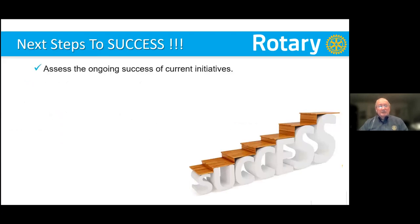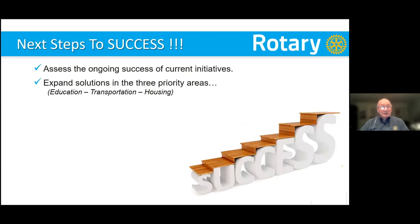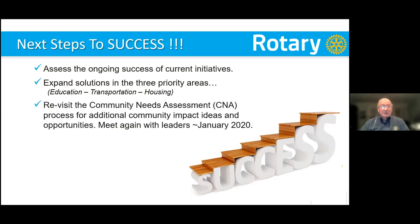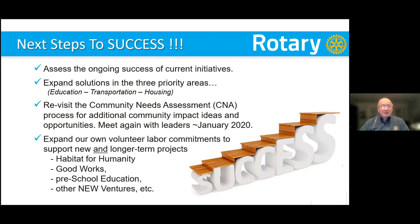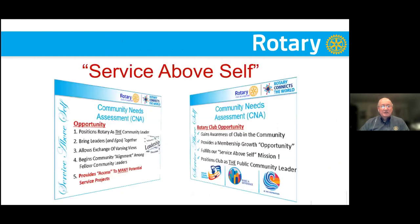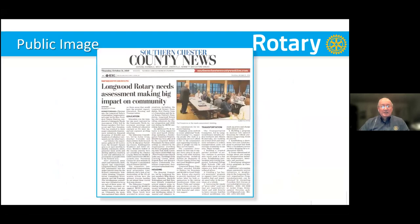The next step to success was to assess the ongoing success of current initiatives — it's important to stay on top of all the things you create. Expand solutions in the three priority areas. We're getting ready this spring to create another community needs assessment and keep that conversation going with existing as well as new people, basically revisiting the CNA process and meeting again with leaders. We're expanding our volunteer labor commitments to support new and longer-term projects: Habitat, woodworks, another repair facility, preschool education, and other new ventures. It provides a path to keep your club going in terms of service above self.